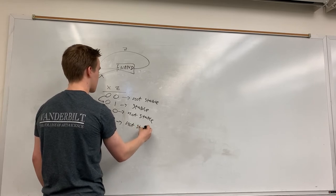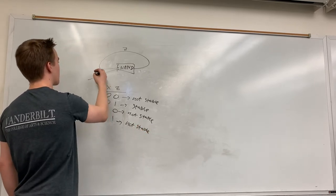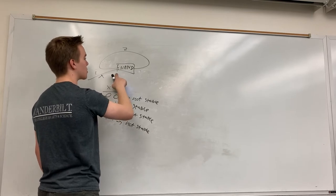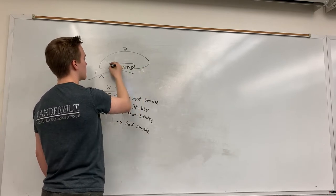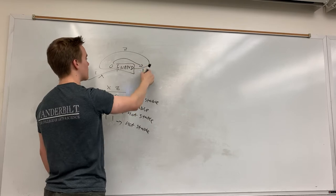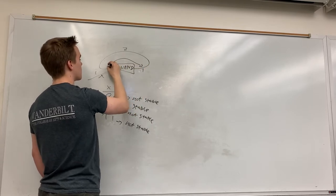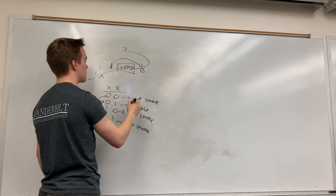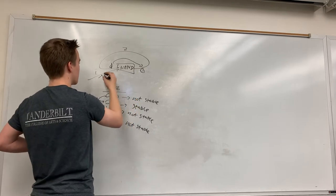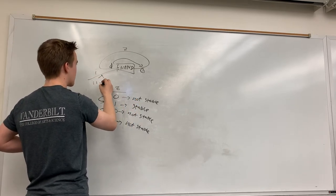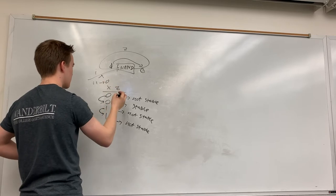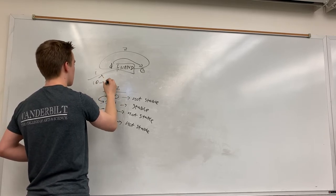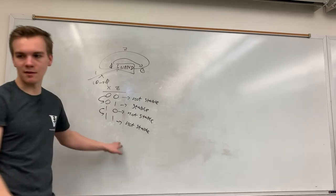To clarify: when X is one and Z starts at zero, Z changes to one. But then with inputs one and one into a NAND, the output is zero — so it oscillates. When we have one and zero going into a NAND, the output is one. So the only stable configuration is X=0, Z=1.